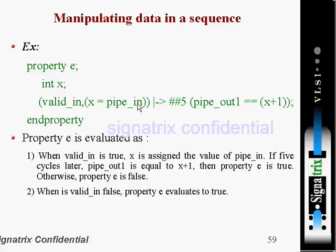First, it has to assign x equal to 'pipe_in'. After five time-unit delays, it has to check whether 'pipe_out_one' is equal to x plus one. This is what is happening here. Now, when would we use this kind of expression?